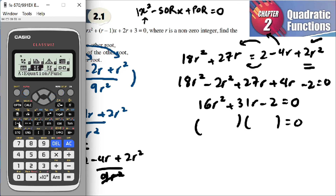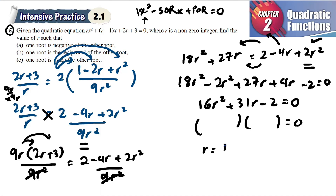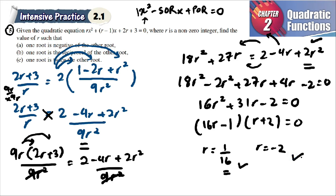Using a calculator to solve the polynomial 16r² + 31r − 2 = 0, we get two values: r = 1/16 and r = −2. We can verify: r + 2 = 0 gives r = −2, and 16r − 1 = 0 gives r = 1/16. So the two values of r are 1/16 and −2.